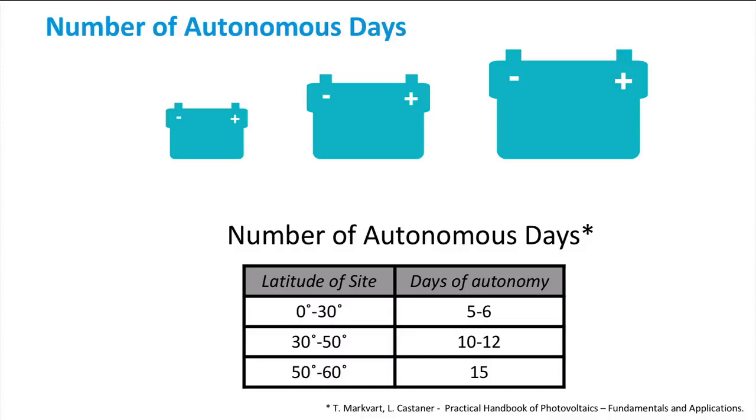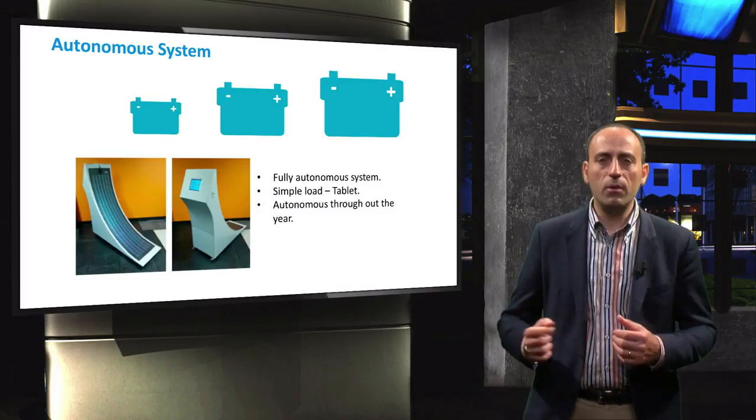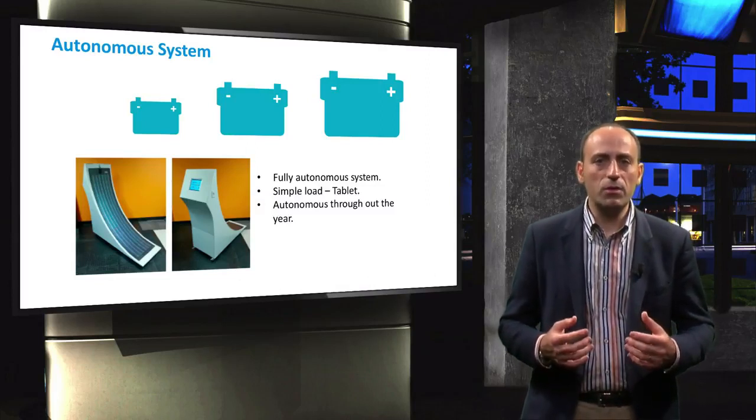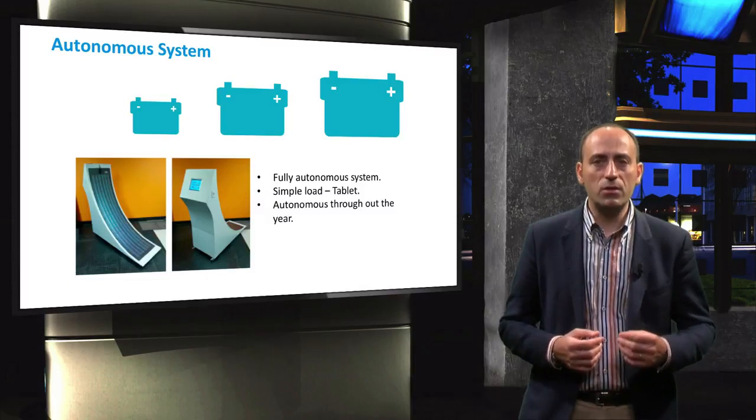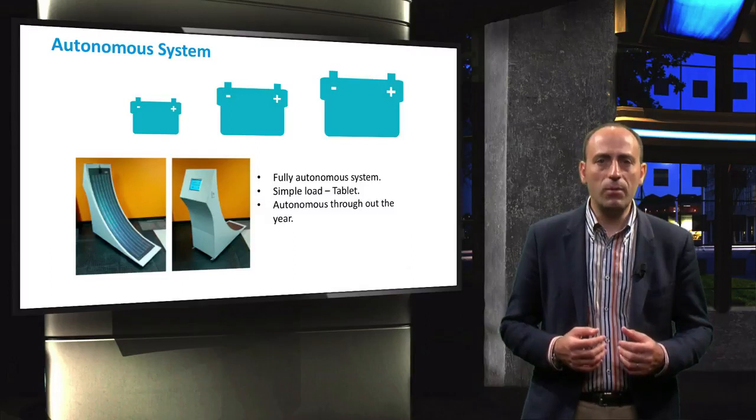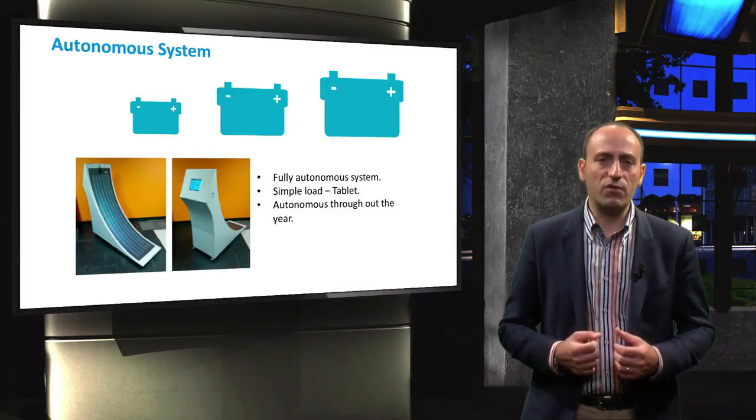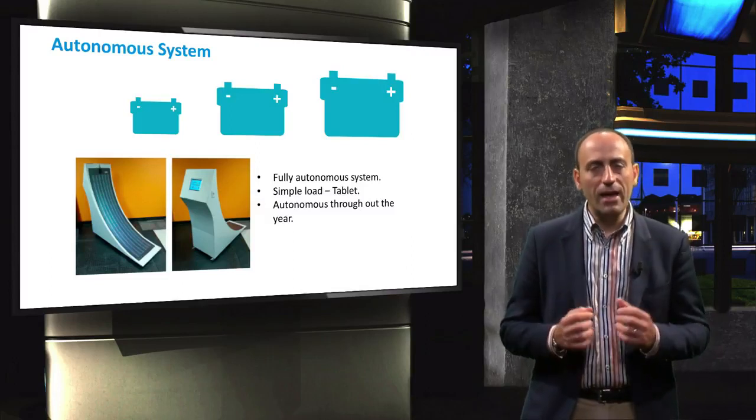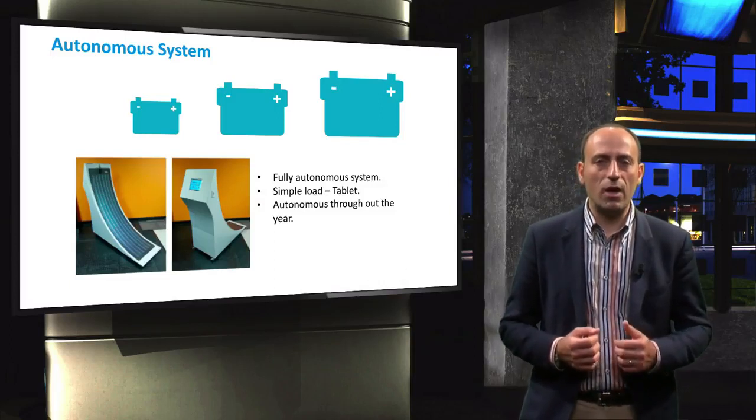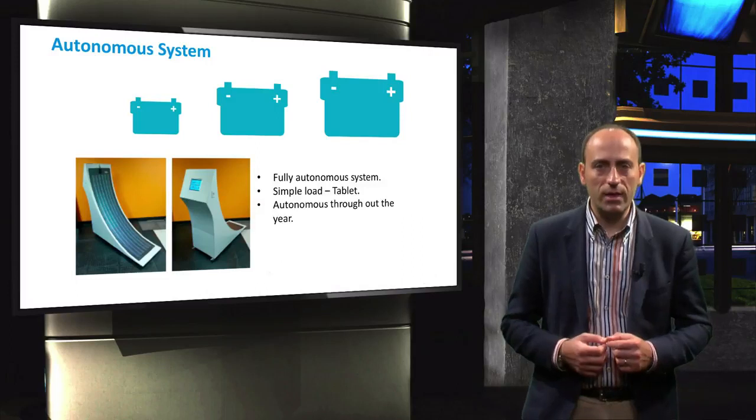For standalone PV systems with small load demands, a fully autonomous system can be more easily achieved. Here we see a simple example of a standalone PV system. This is an infotainment spot that is fully powered by solar energy with a battery backup. The load is a simple tablet that requires only a few watts of power to operate. For any location in Netherlands, this system is fully autonomous at all times with just a single battery as a backup.